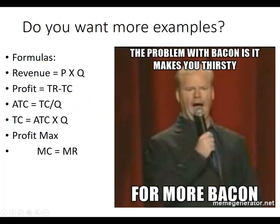So these are the formulas. If you want more examples, email me. Okay. So remember, total revenue is price times quantity. Profit is total revenue minus total cost. Average total cost, anytime you see average anything, just divide it by quantity. And always remember this profit maximization condition.